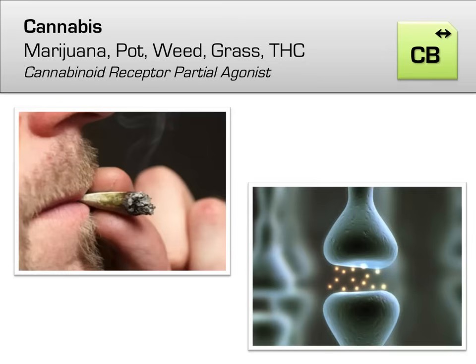Mechanistically, cannabis works by binding to cannabinoid receptors within the brain. Throughout your body there are receptors which bind to endogenous molecules known as endocannabinoids. These endocannabinoids modulate a variety of functions, including appetite, pain sensation, memory, and mood. However, these receptors are bound much more strongly by tetrahydrocannabinol, the active ingredient in cannabis.